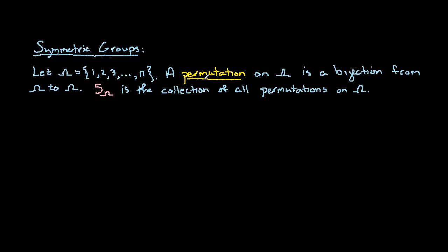And we'll define a permutation on omega to be a bijection from omega to omega. And you should recall here that a bijection is a map that is both injective, so it's 1 to 1, and surjective, so it's onto, so it's 1 to 1 and onto.